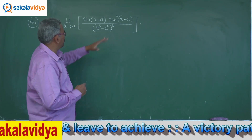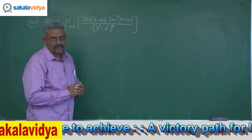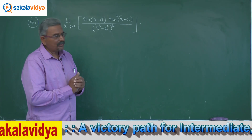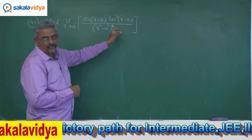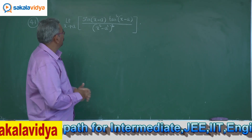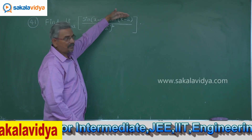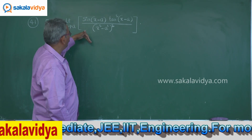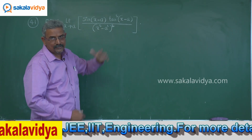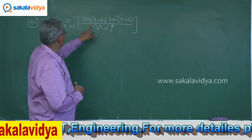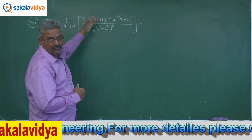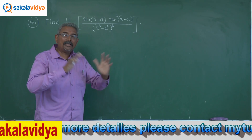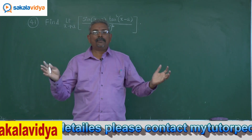Here, x square minus a square factors we need to write. They are (x plus a) into (x minus a), and being squared, we get (x plus a) whole square and (x minus a) whole square. So tan square (x minus a) by x minus a square can be written, and we have one more factor that is 1 by (x plus a). Also, sin of (x minus a) we need to write as sin(x minus a) by (x minus a), so that simultaneously both the formulae have to be applied here.